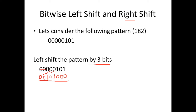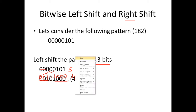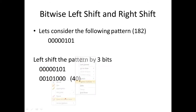Whatever remains in the empty places, we pad it with zeros. The actual value of this bit pattern is 5 in binary, and after the left shift the value becomes 40 — because 8 times 5 equals 40. That's how a left shift is performed.